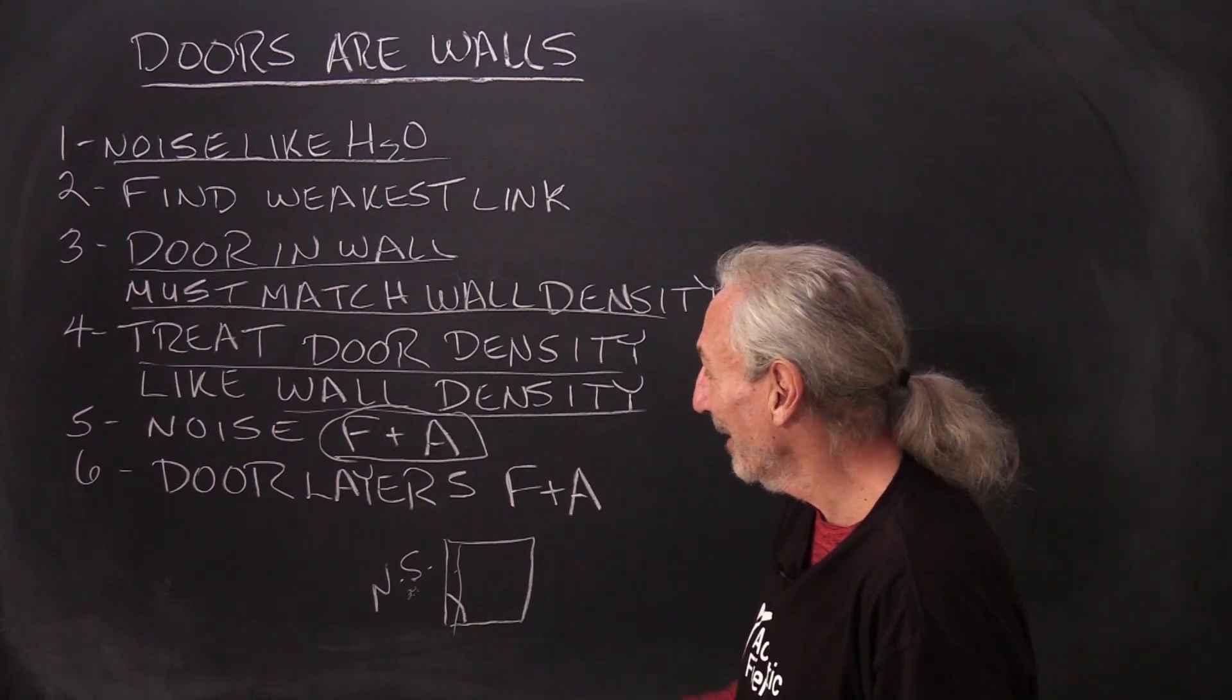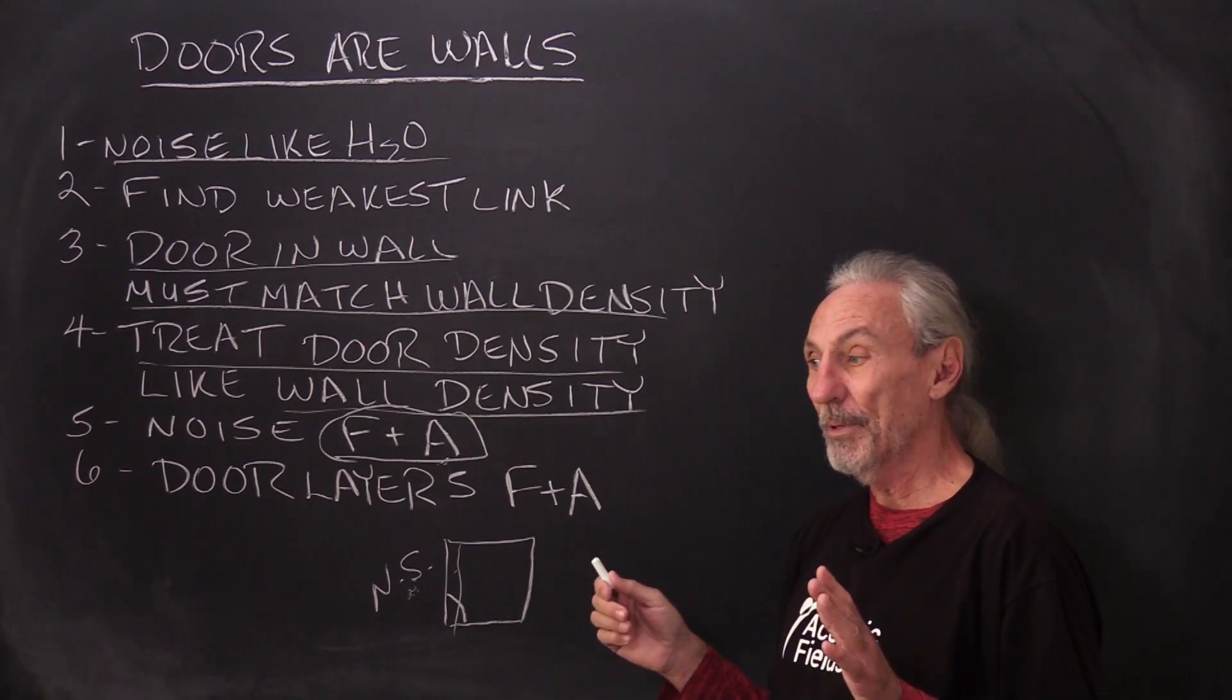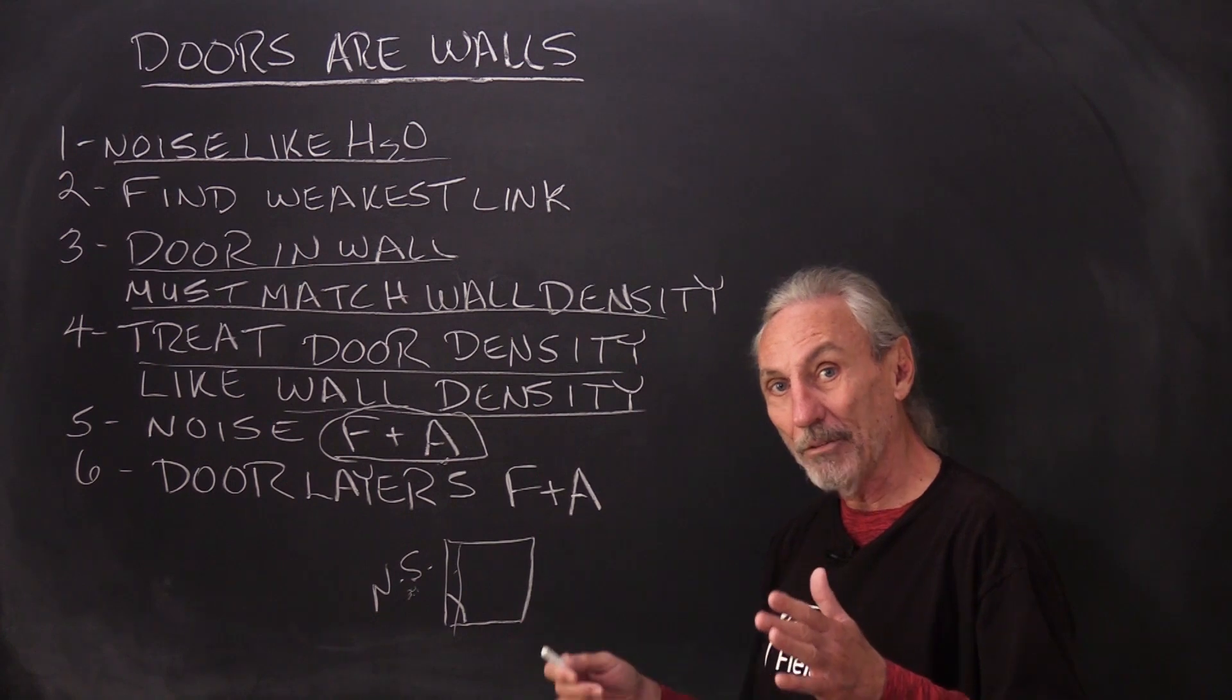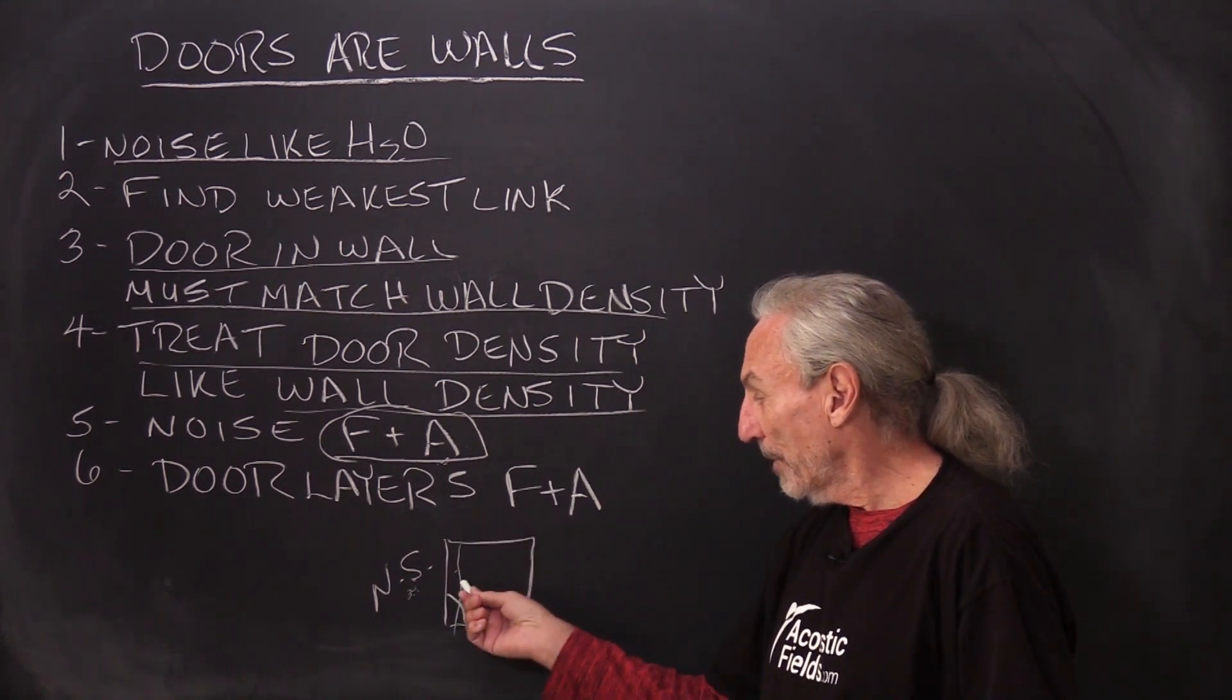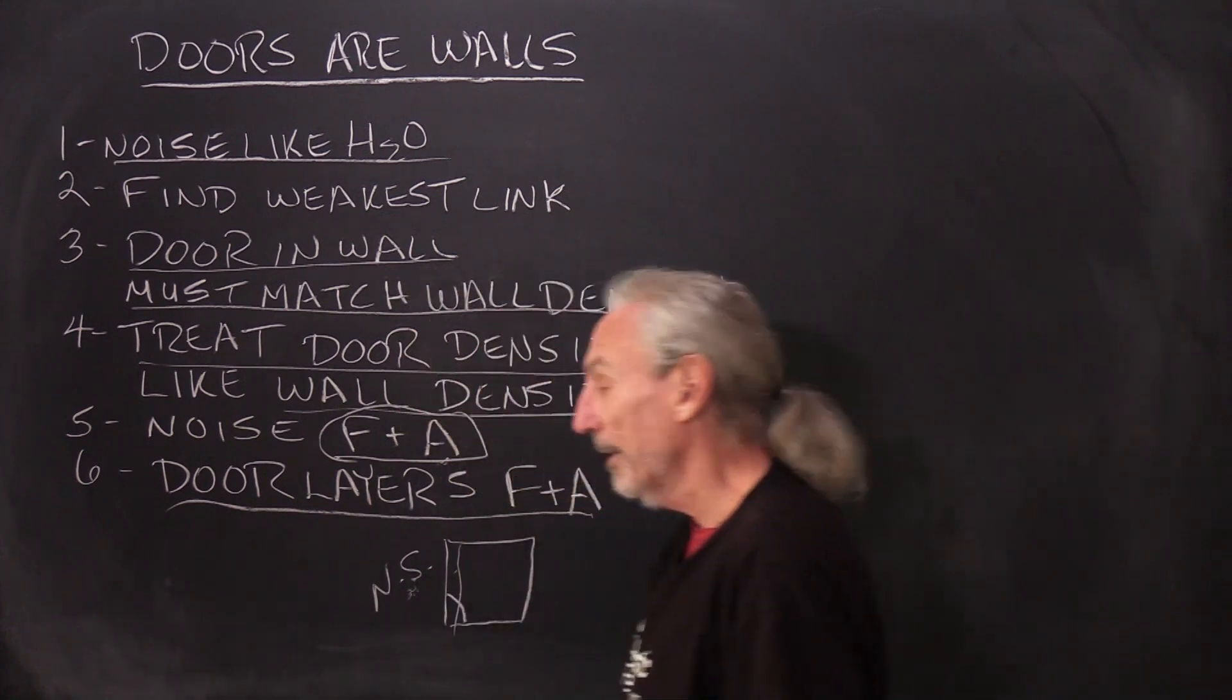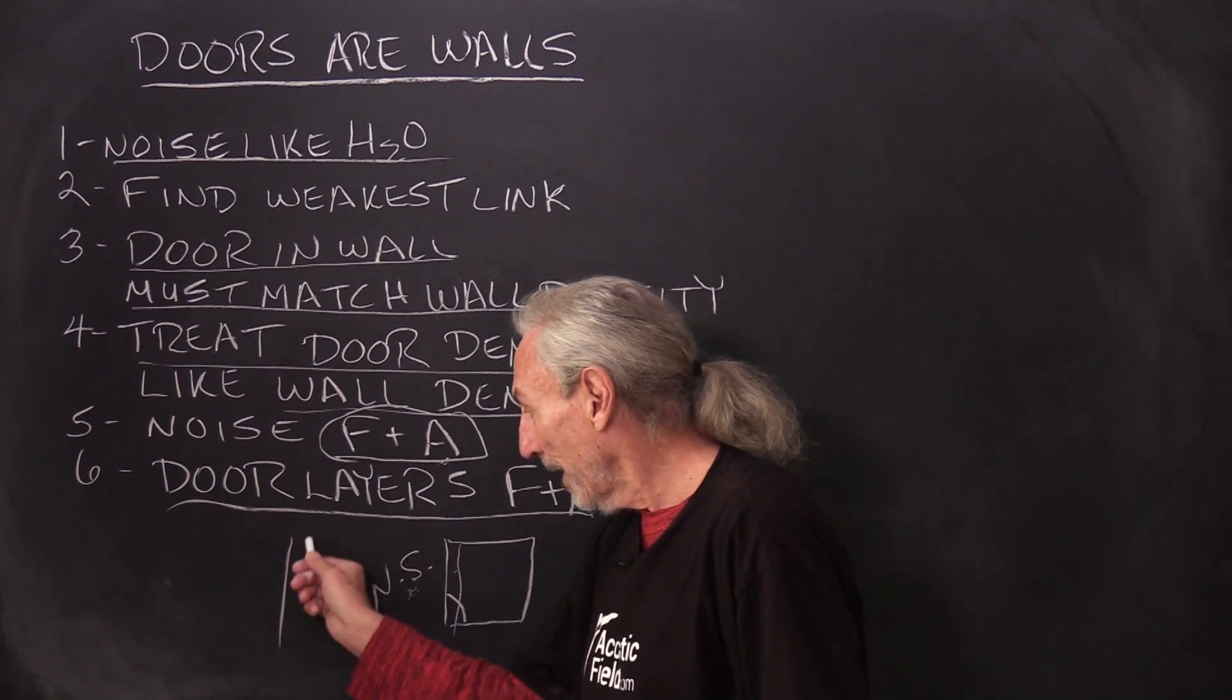So the bottom line here is frequency and amplitude. Remember, we've got to know what we're doing. We've got to know what we're fighting. When countries go to war, they try to assess the strengths and limitations of their enemies and they attack the limitations. They develop a strategy. So we develop a strategy of isolating noise, and then we have to come up with a design that is a tactic to complement the strategy. We're going to design our door and it's going to have different layers.